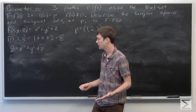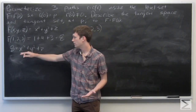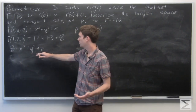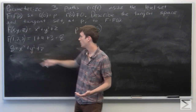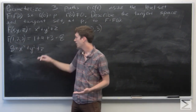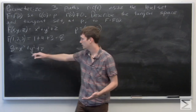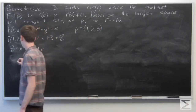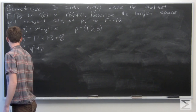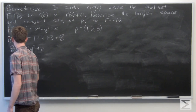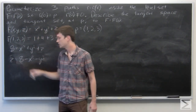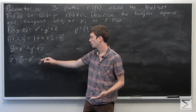When we parameterize our paths, we want each path to lie entirely within this level set. We'll pick x equals 1 and y equals 2, then solve for z using the level set equation to ensure the path stays on the level set. So z equals 8 minus x squared minus y squared.